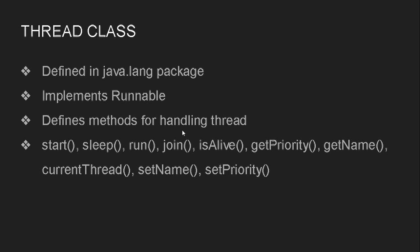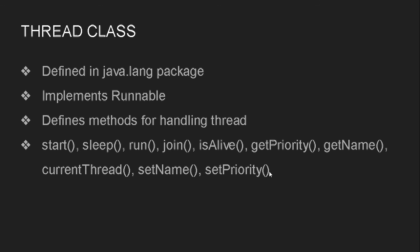After that we have join(), which we will discuss in more detail in this tutorial. We also have isAlive(), which we will also discuss in more detail. getPriority() is for getting the priority of a particular thread. getName() is to get the name of a particular thread. currentThread() is used to get the current thread which is under execution — if you want to know details of the thread we are working on right now. setName() is for setting a name for a thread and setPriority() is for setting the priority of a thread.